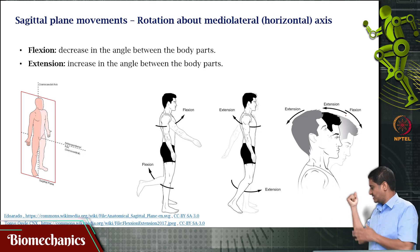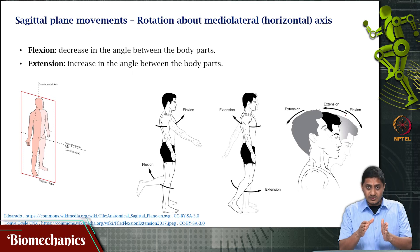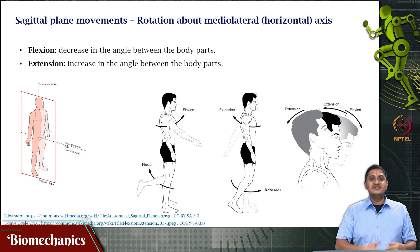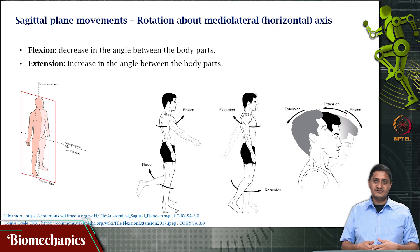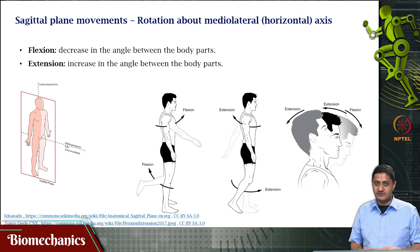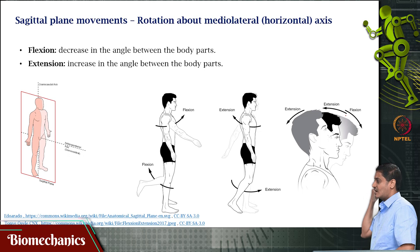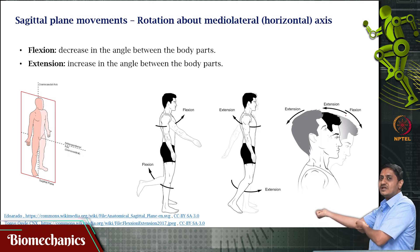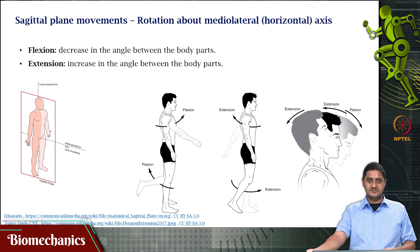This movement is happening in this plane. Remember, the plane when I am looking at you or when I am turning around is always sagittal to me — it is with reference to the particular human being who is moving. So when I am doing flexion or extension, the movement is happening about the medial-lateral axis that is passing through the elbow joint. So: flexion, extension.